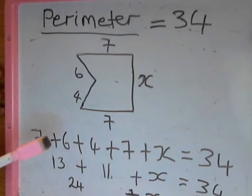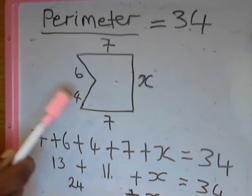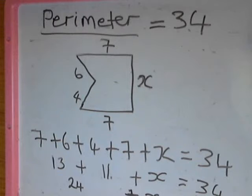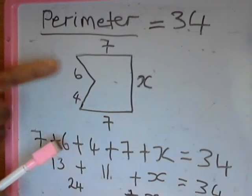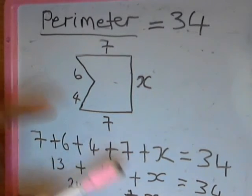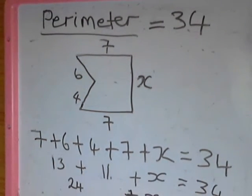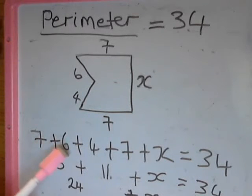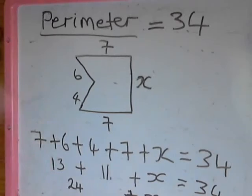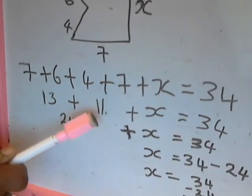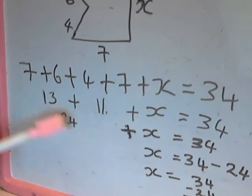So we know that 7 plus 4 plus 6 plus 7 plus x will give us 34. So here we go: 7 plus 6 plus 4 plus 7 plus x will give us 34. So we go further: 7 plus 6 gives us what? 13. Then 4 plus 7 gives us what? 11.